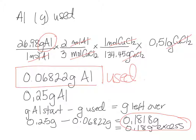If you subtract 0.06822 grams from 0.25 grams, we have 0.18 grams left over at the end of our excess reagent.